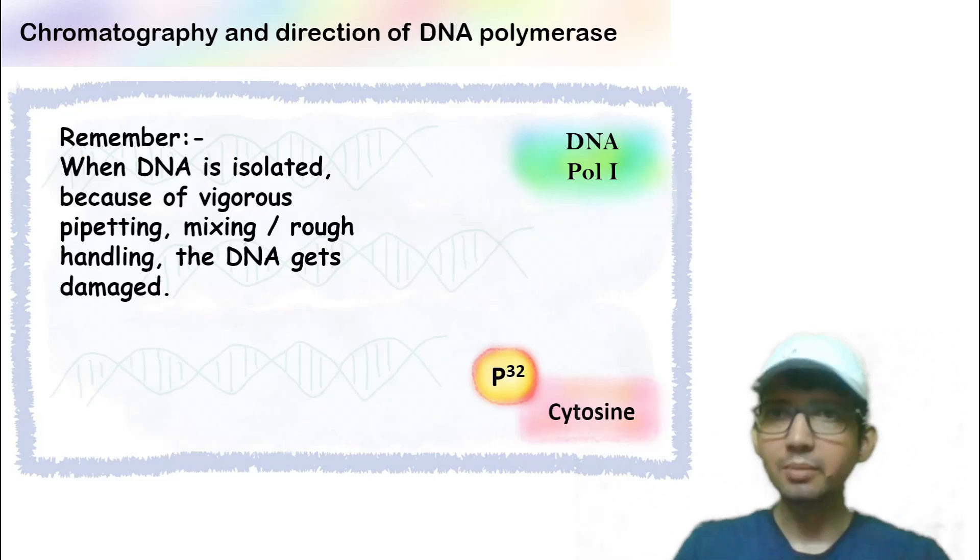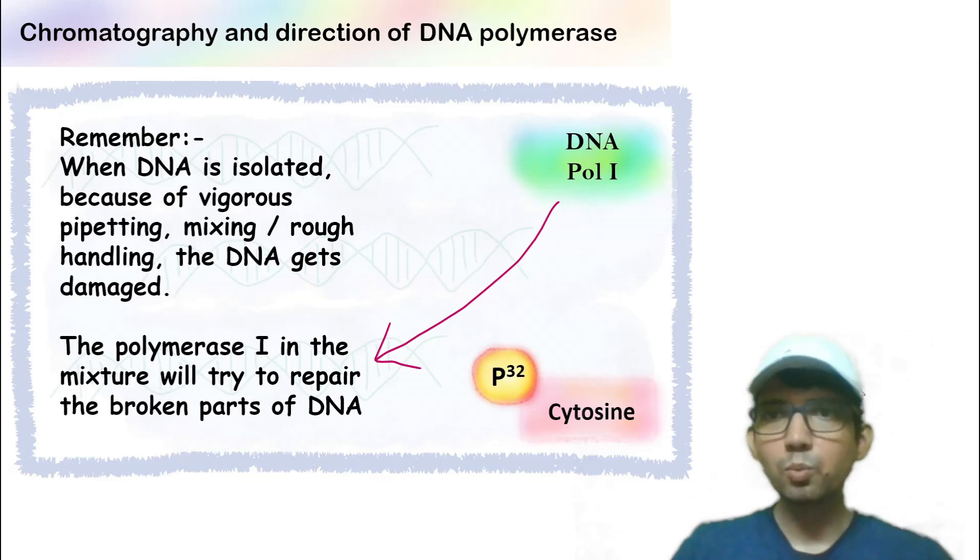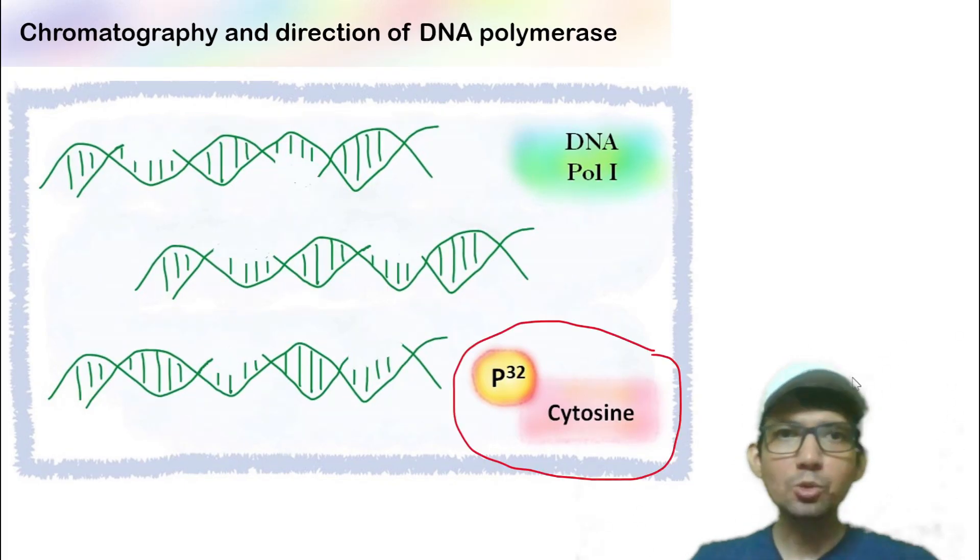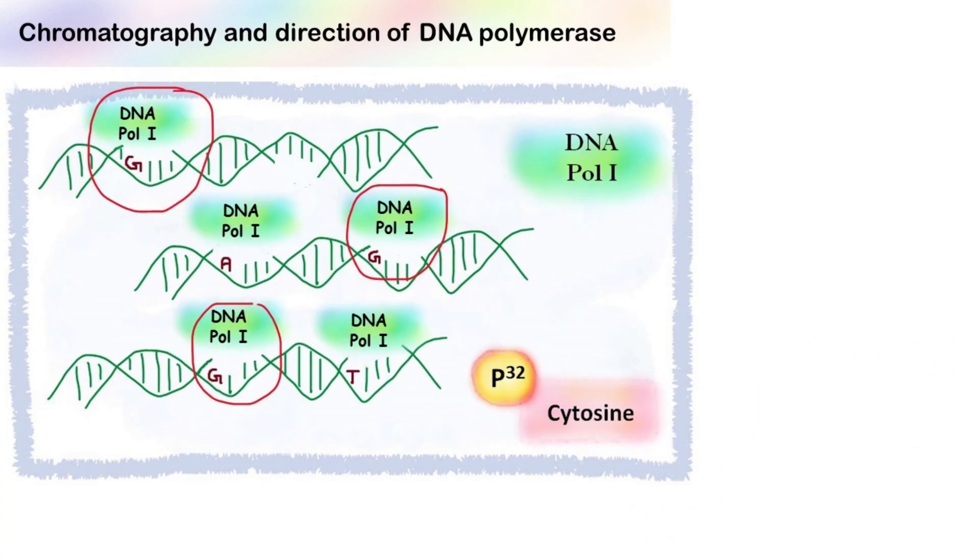Now remember, when DNA is isolated, because of vigorous mixing, pipetting, and rough handling, the DNA gets damaged. The polymerase 1 in the mixture will try to repair the broken pieces of DNA. Since we have P32 labeled cytosine, the DNA polymerase will add cytosine if it finds guanine in the complementary strand. So cytosine will be added over here, over here, and over here.